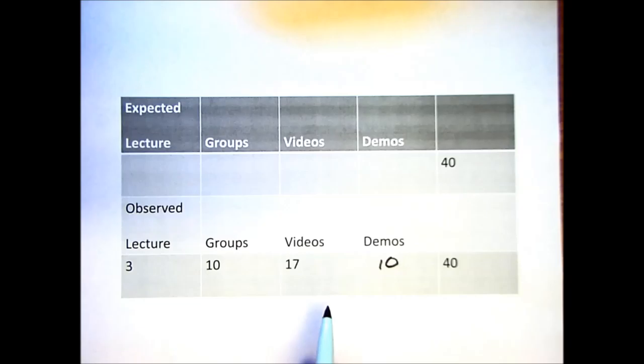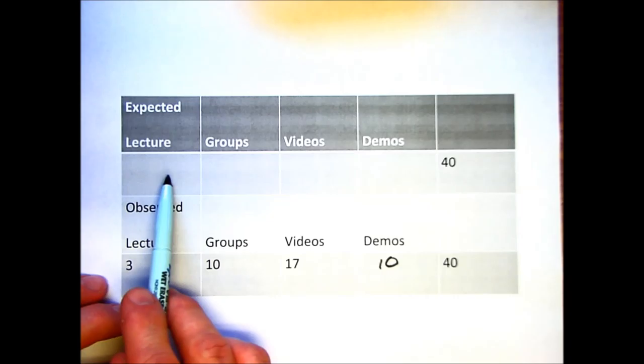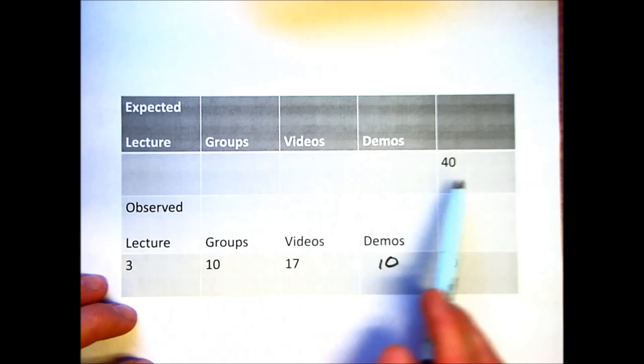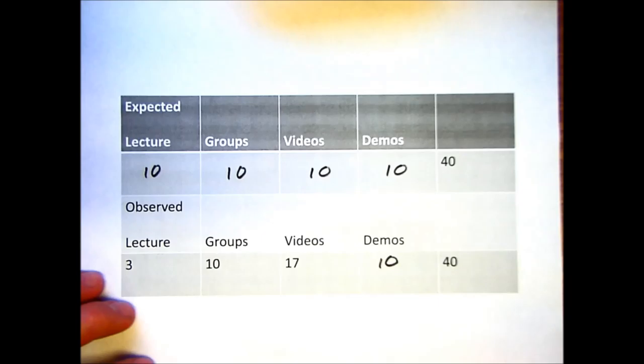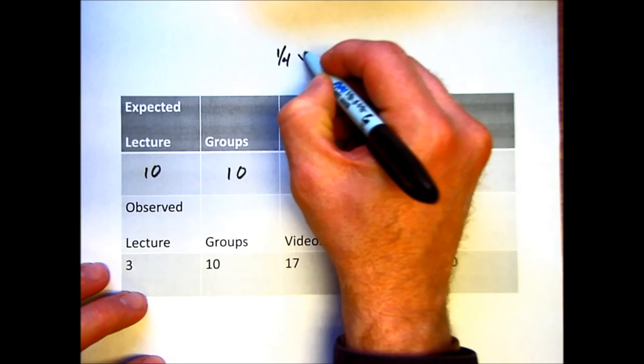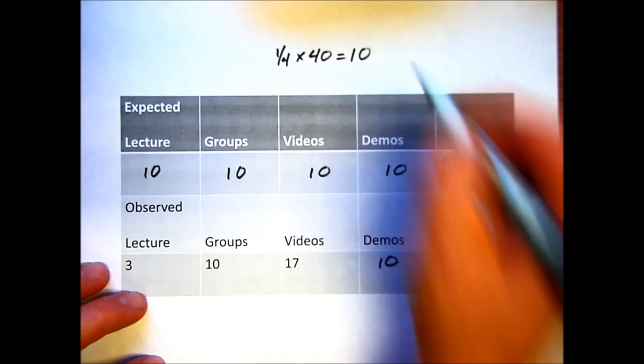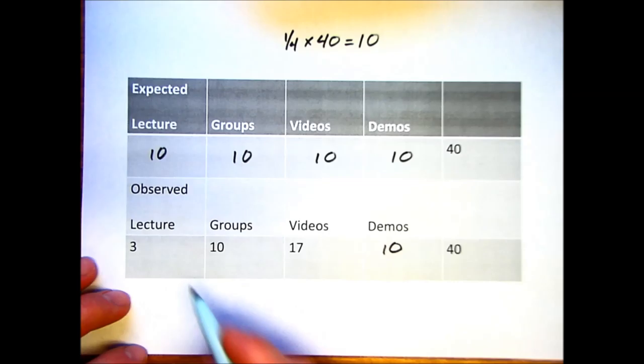If we want to figure out the expected frequencies for each of these. Well the idea is that if the null hypothesis for this is that there's no preference. What would we expect if we've got 40? What would we expect in each category? Well we'd expect an equal distribution, right, for this. So basically this is what we expect in a null hypothesis. Proportion we expect in a null hypothesis times the sample size would give us ten for each of those.